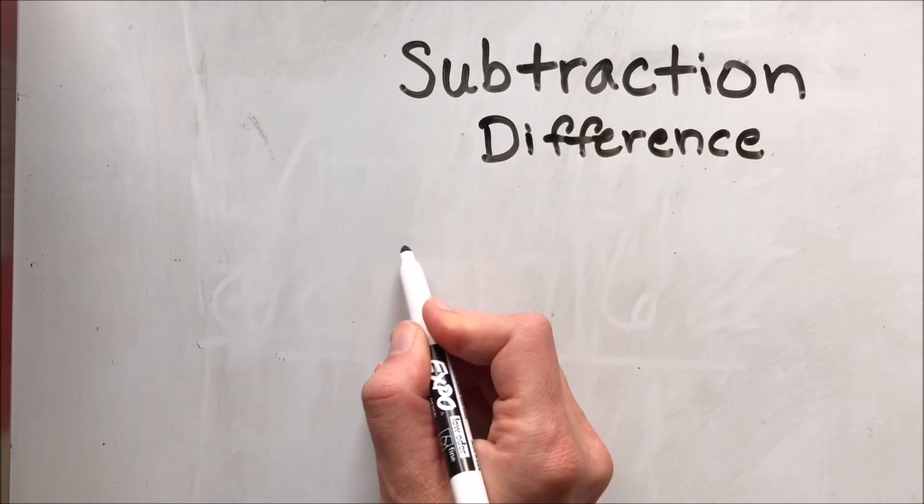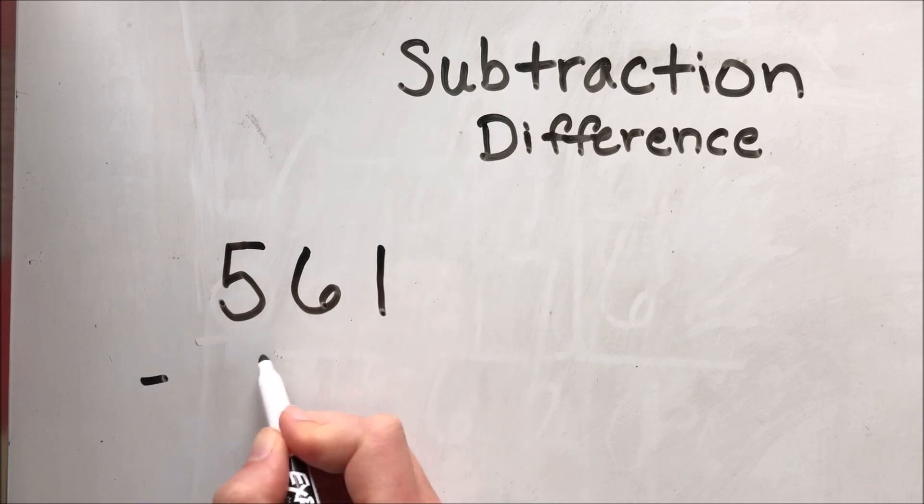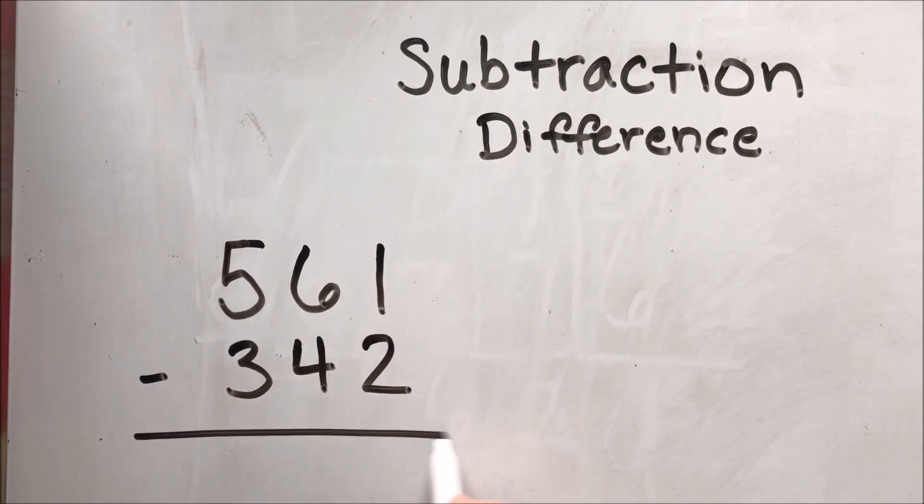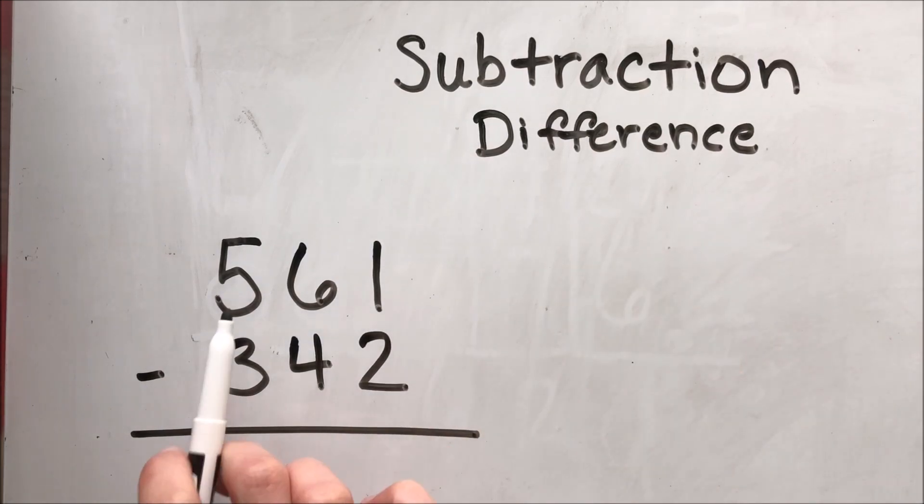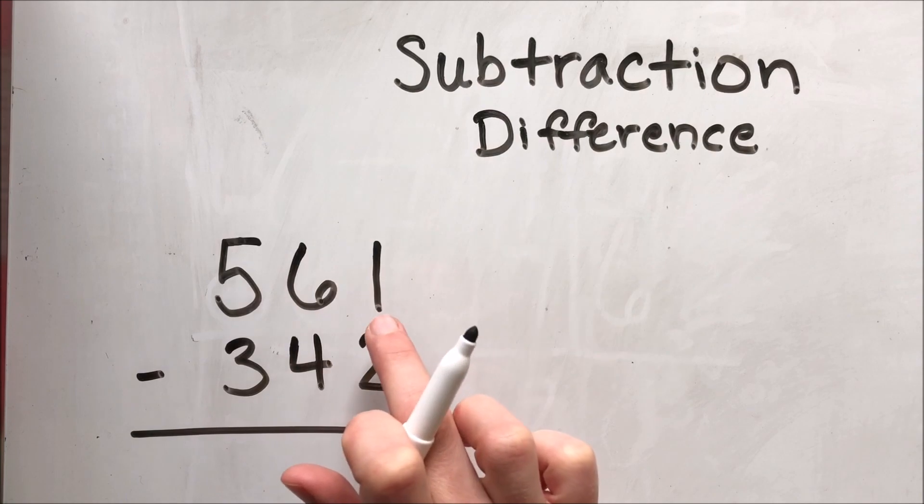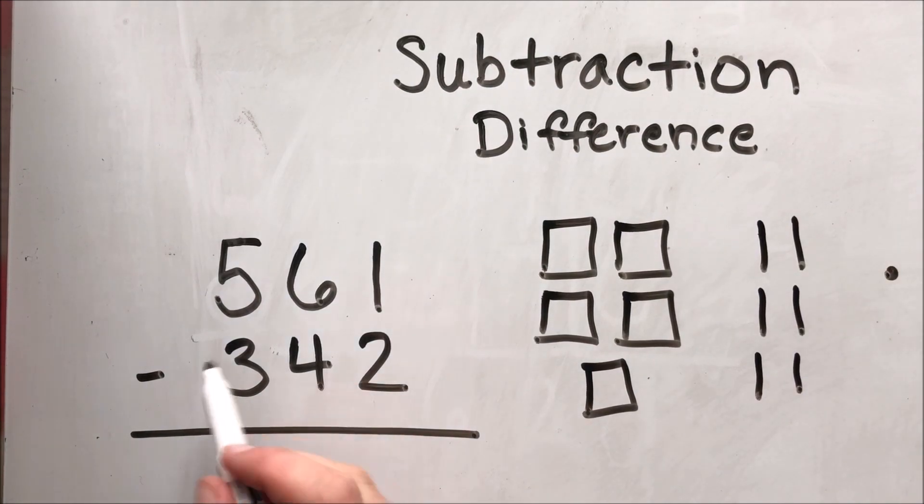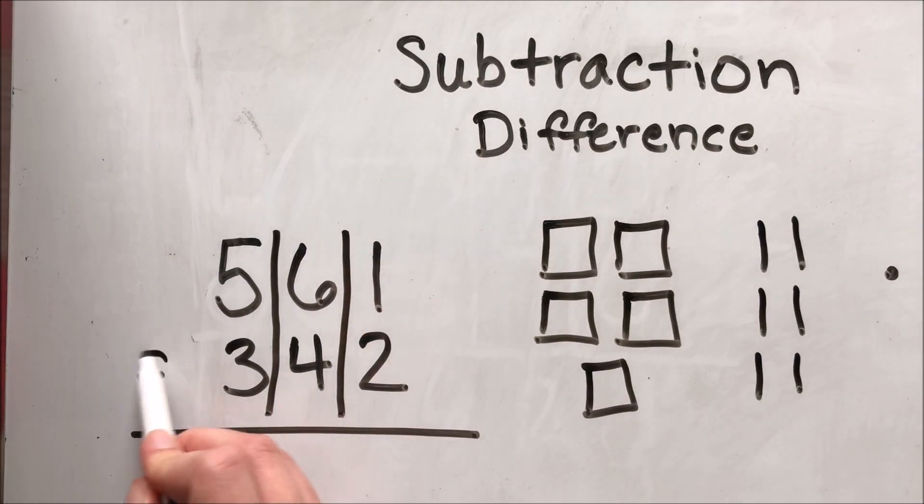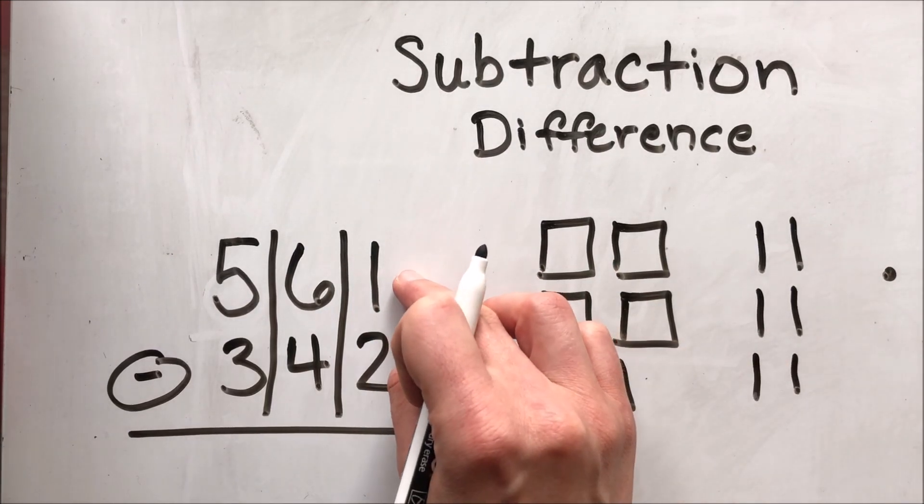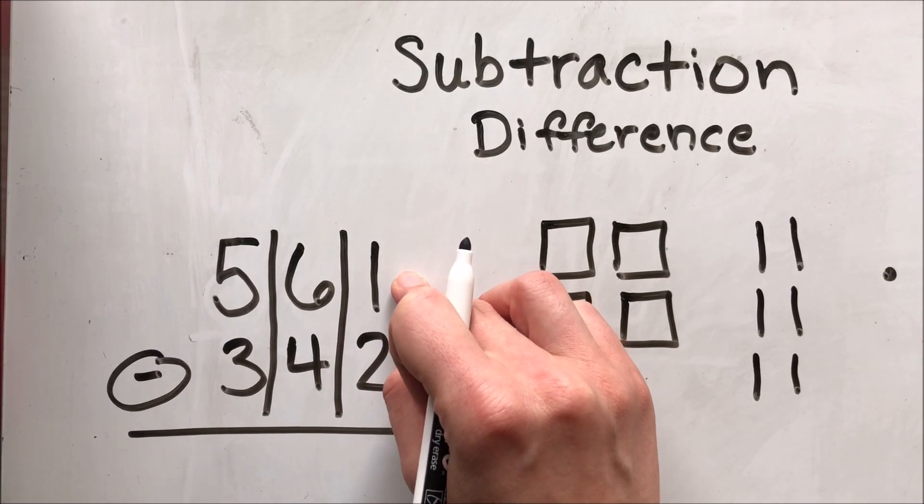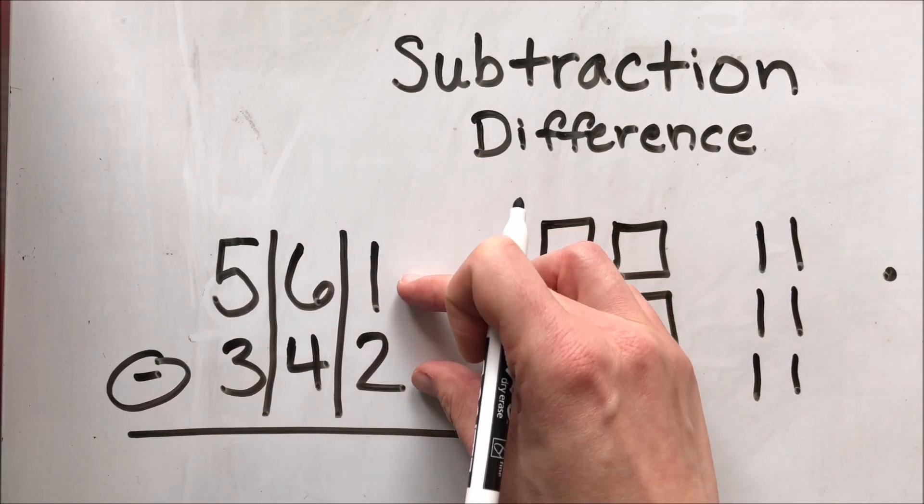So again I'm going to set up my problem. I'm going to make sure I have enough space. My problem is going to be 561 minus 342. Again I set up my problem vertically and I'm going to leave some space for a picture over here just so we can remember what this looks pictorially. So I'm going to start with my five hundreds, my six tens, and my one one. Now this time we're going to draw our lines and remember that we are subtracting. So we're not going to draw this 342. Instead we're taking away from our picture over here or we're taking away from this number. So we had a little poem that said, more on top, no need to stop, more on the floor, go next door and get 10 more, numbers the same, zeros the game.